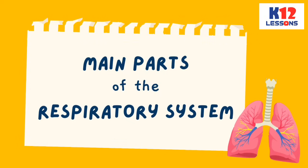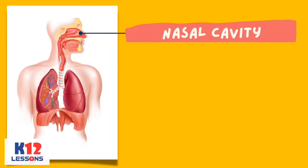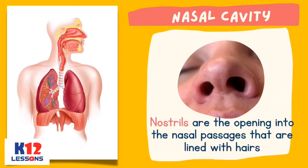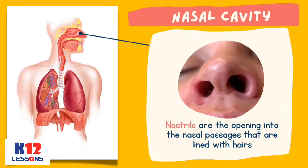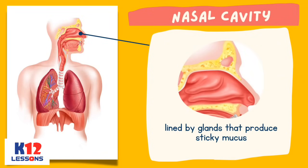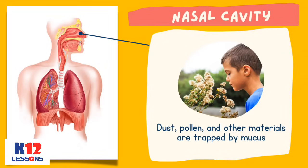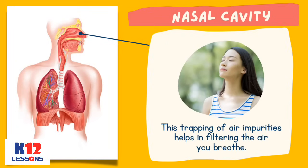The main parts of the respiratory system. Nasal cavity: the nostrils are the openings into the nasal passages that are lined with hairs. The nasal cavity is lined by glands that produce sticky mucus. Dust, pollen, and other materials are trapped by mucus. This trapping of air impurities helps in filtering the air you breathe.